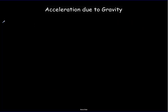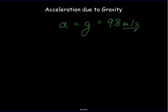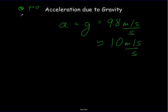The most famous acceleration is the acceleration due to gravity, usually written as g, which equals 9.8 meters per second of speed gained every second. We often round this to about 10 meters per second every second. So if an object is dropped, after one second it would be going 10 meters per second.